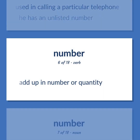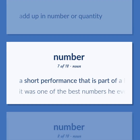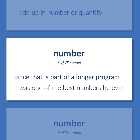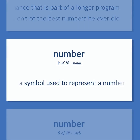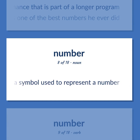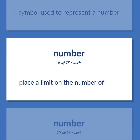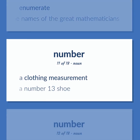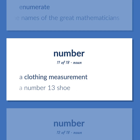Add up in number or quantity. A short performance that is part of a longer program. Example: It was one of the best numbers he ever did. A symbol used to represent a number. Place a limit on the number of. Enumerate. Example: We must number the names of the great mathematicians. A clothing measurement. Example: A number 13 shoe.